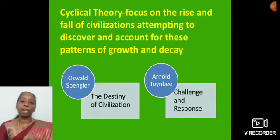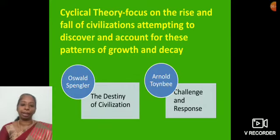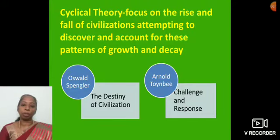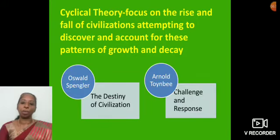Hope you are clear with Herbert Spencer's Social Darwinism. Moving to cyclical theory. This theory focuses on the rise and fall of civilizations, attempting to discover and account for these patterns of growth and decay. For this theory, I would like to take two authors: Oswald Spengler's The Destiny of Civilization and Arnold Toynbee's Challenge and Response.